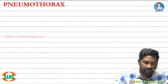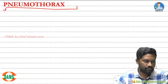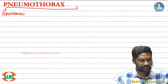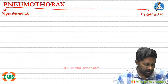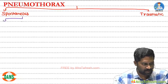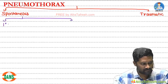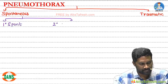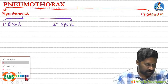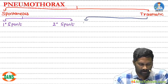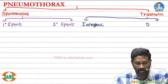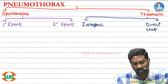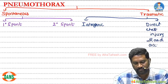Let us see the classification of pneumothorax. Pneumothorax is broadly classified into spontaneous pneumothorax and traumatic pneumothorax. In spontaneous pneumothorax, we have primary spontaneous and secondary spontaneous. In traumatic pneumothorax, there is trauma happening in hospitals called iatrogenic pneumothorax, and trauma happening outside — direct chest injuries — generally during road accidents. This is usually dealt by surgeons.